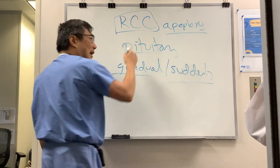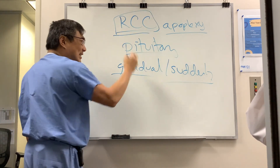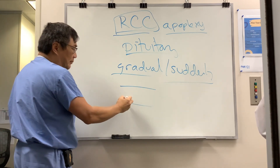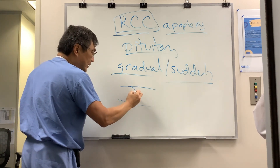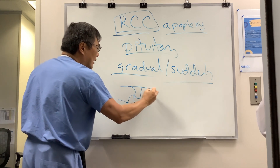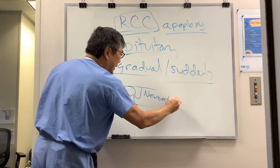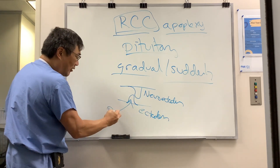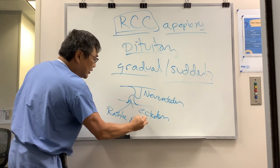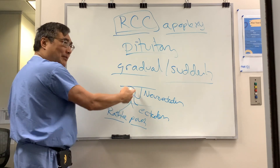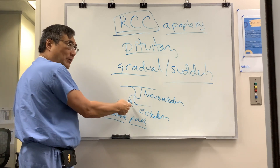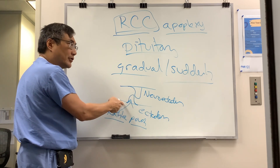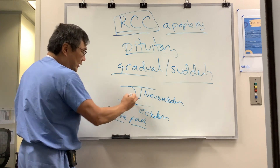For Rathke's cleft cyst, this is an extra-axial lesion caused by a cyst in the Rathke's cleft. The surface ectoderm and the neuroectoderm meet to produce the pituitary gland — the descending and ascending pieces meet. This outpouching of the surface ectoderm is called Rathke's pouch, and you could have a tumor from this combination, which we call craniopharyngioma, because it's part cranio (neuroectoderm) and part pharynx (surface ectoderm).